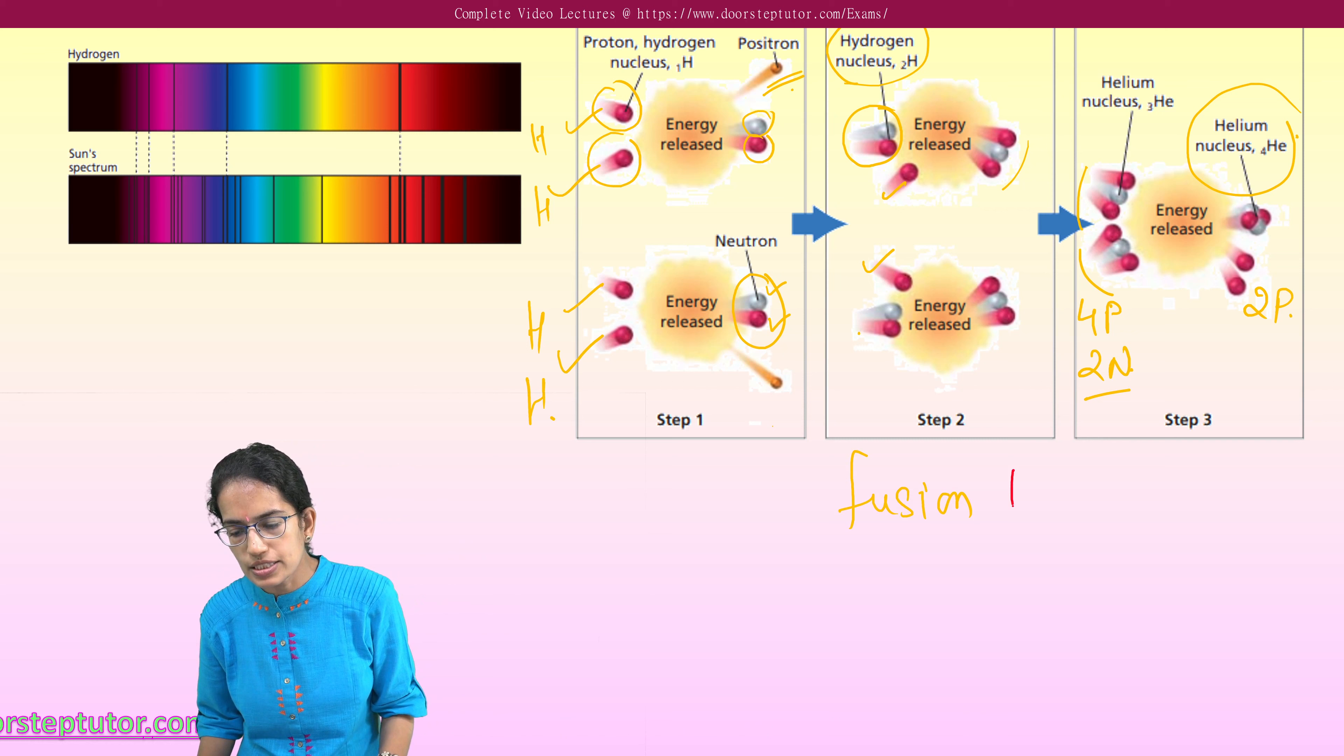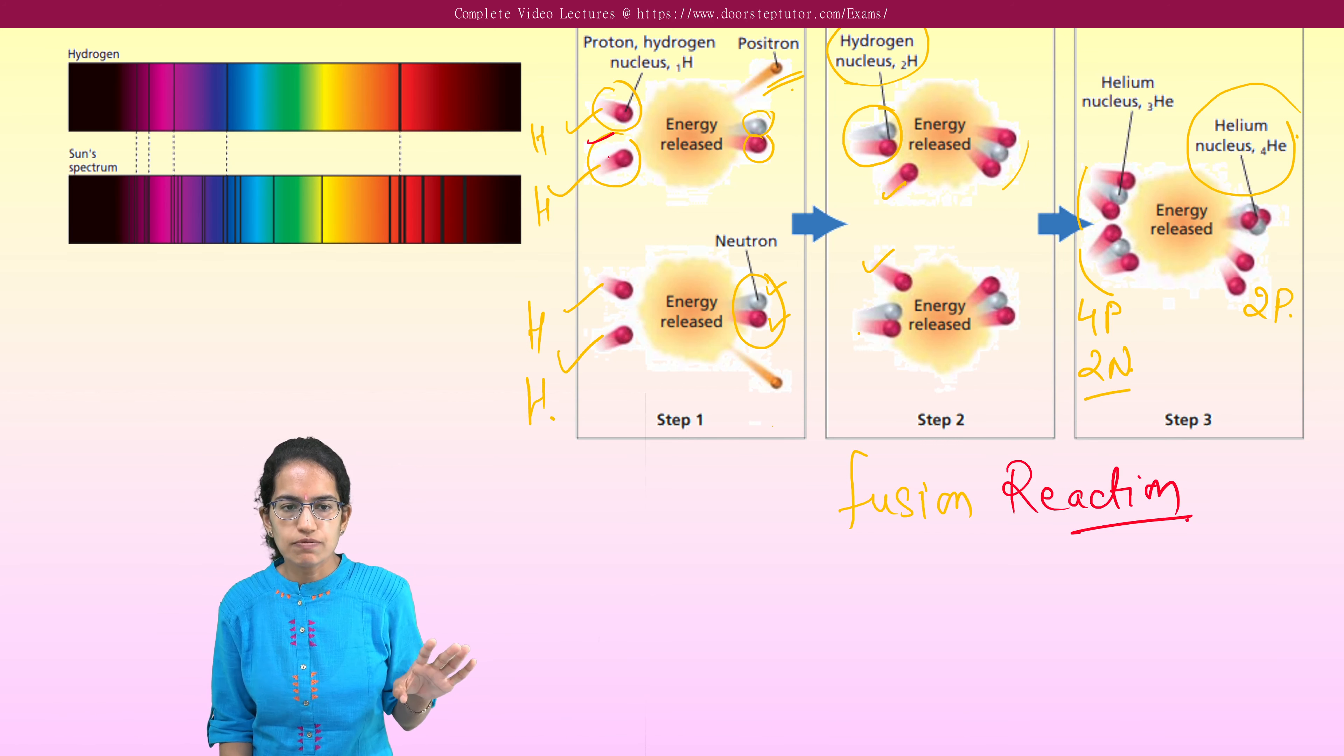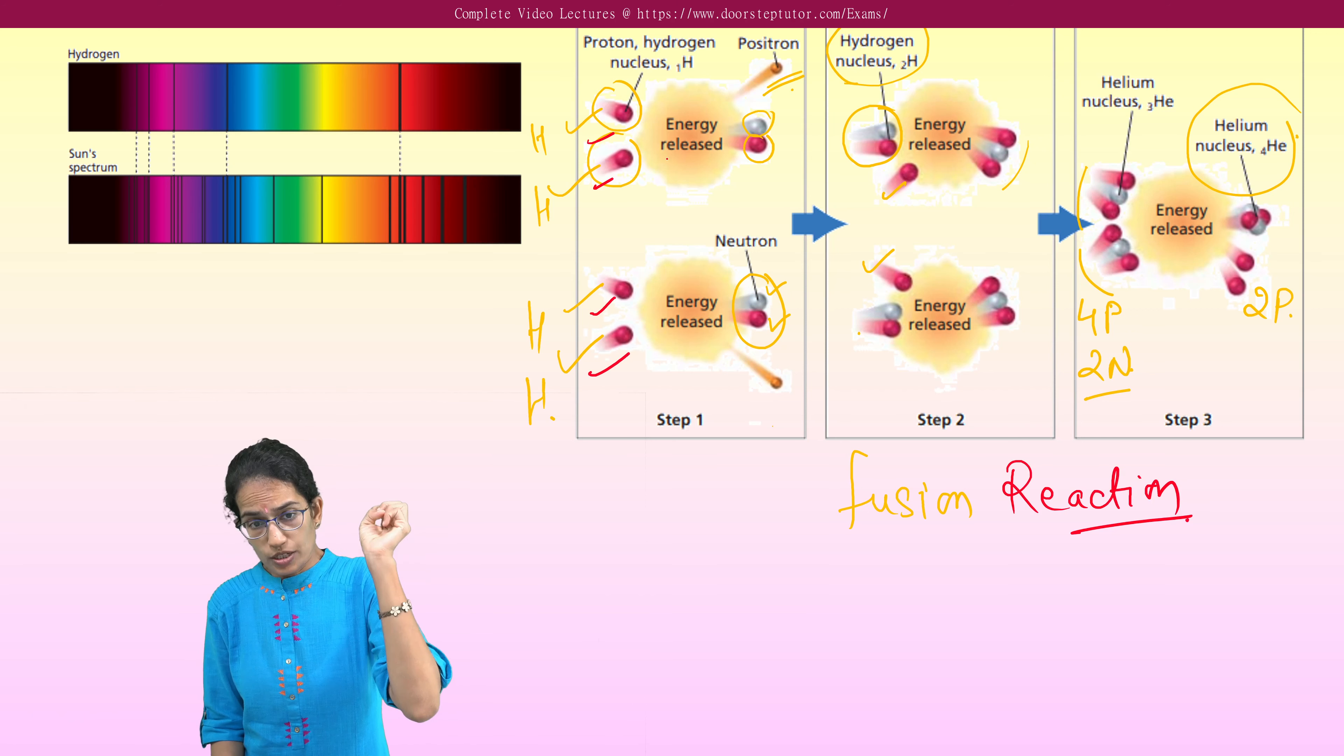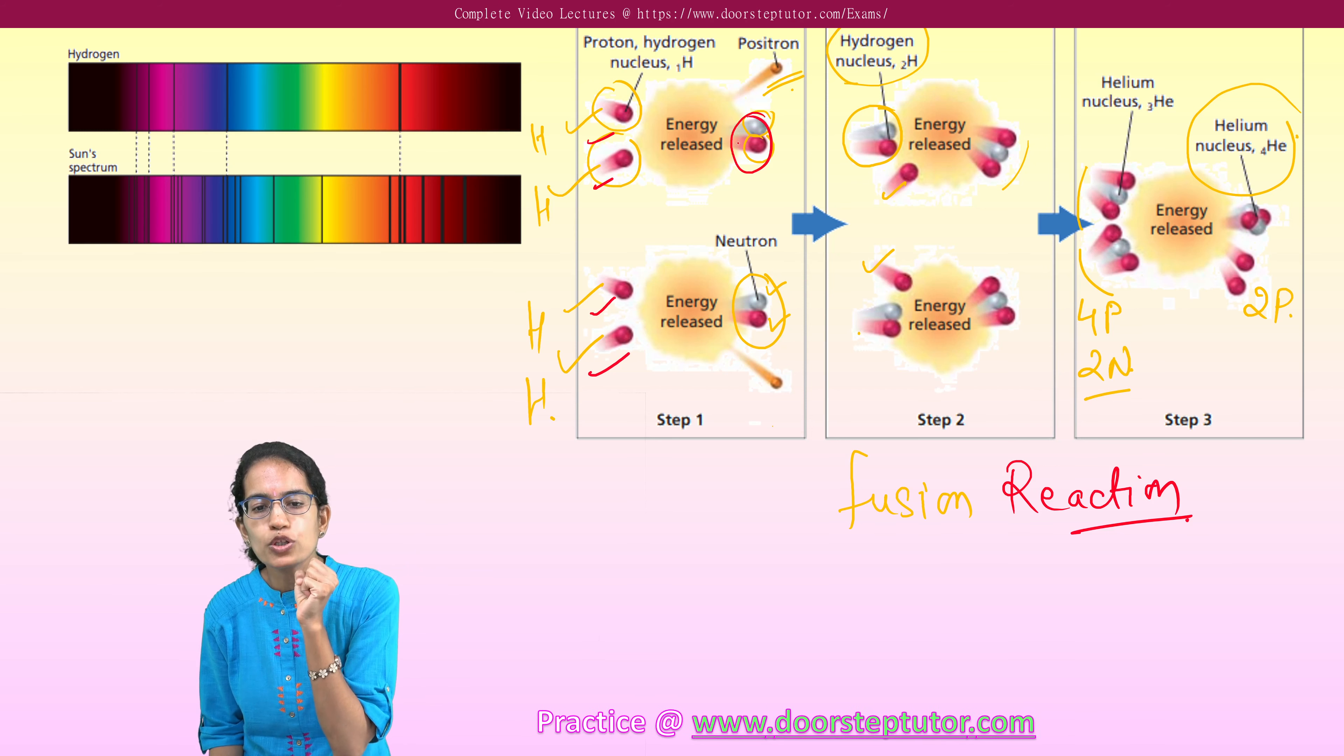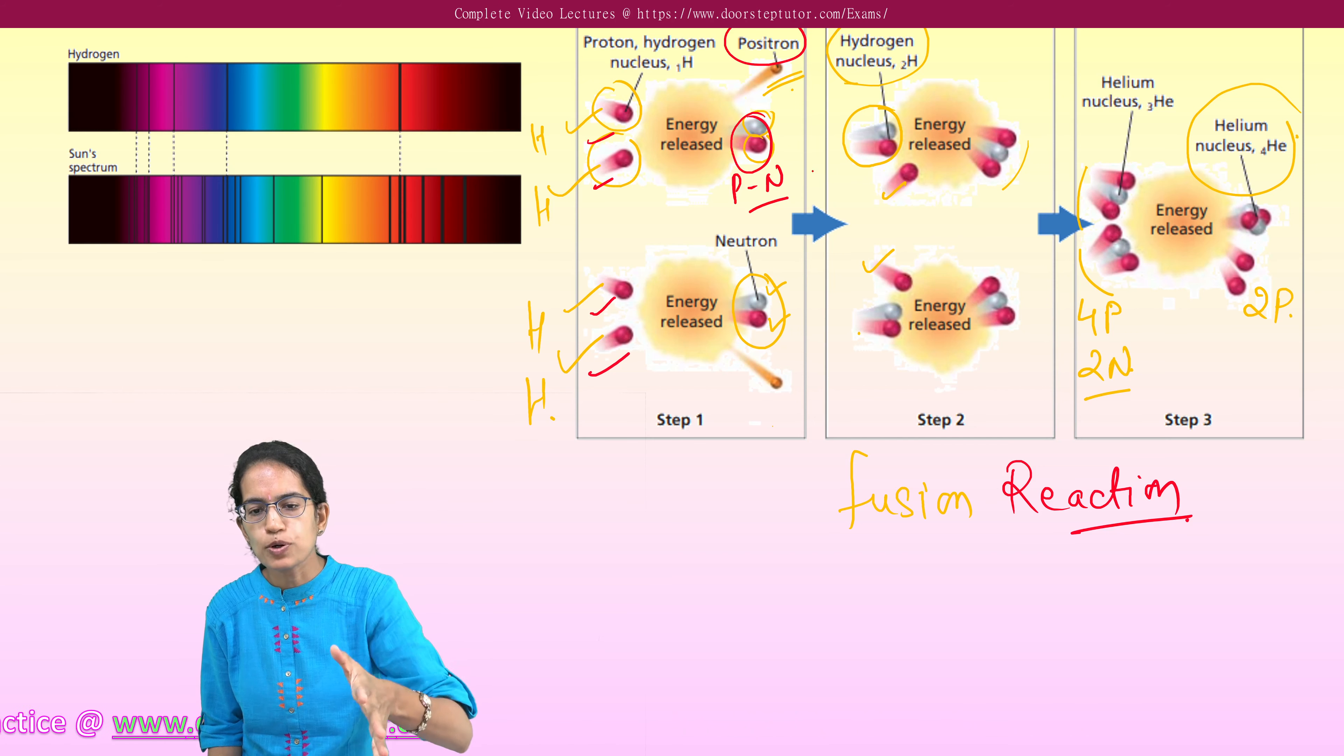So this fusion reaction which takes place in the sun is really important. I repeat again, four hydrogen which are independently the protons. So four protons, two protons when they combine, energy is released. A proton neutron pair is formed and a positron is released free. Now this proton neutron pair along with the proton,